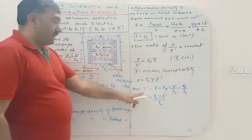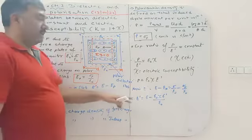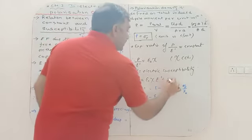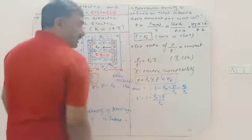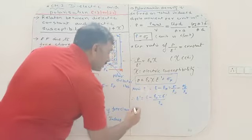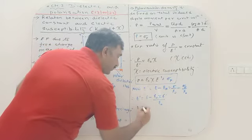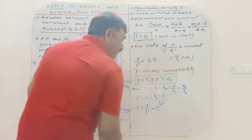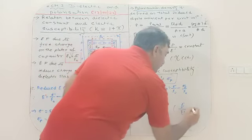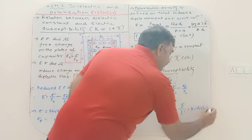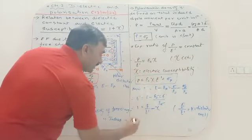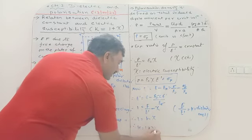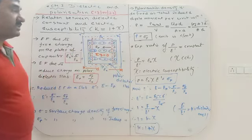The reduced electric field is E' = E − Eₚ = σ/ε₀ − σₚ/ε₀. Since σₚ = P, substituting gives E' = E − P/ε₀, which simplifies to E/E' = 1 + χₑ. Since E/E' is defined as the dielectric constant K, we get K = 1 + χₑ. This is the relation between dielectric constant and susceptibility.